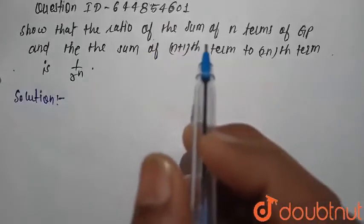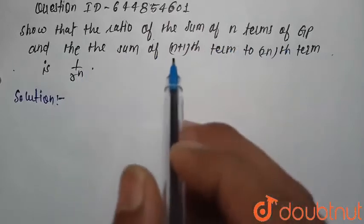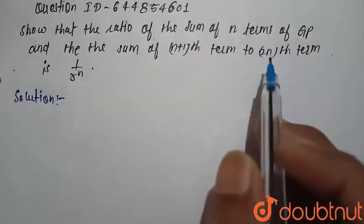Show that the ratio of the sum of n terms of GP and the sum of n plus 1 terms to 2n terms is 1 upon r to the power n.